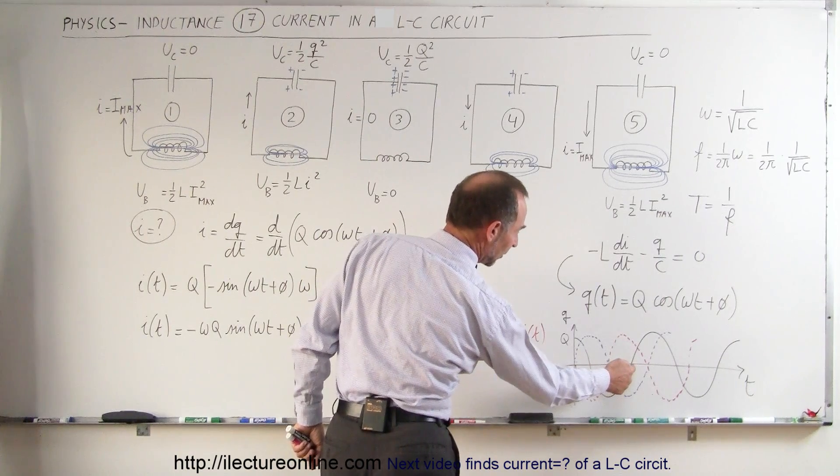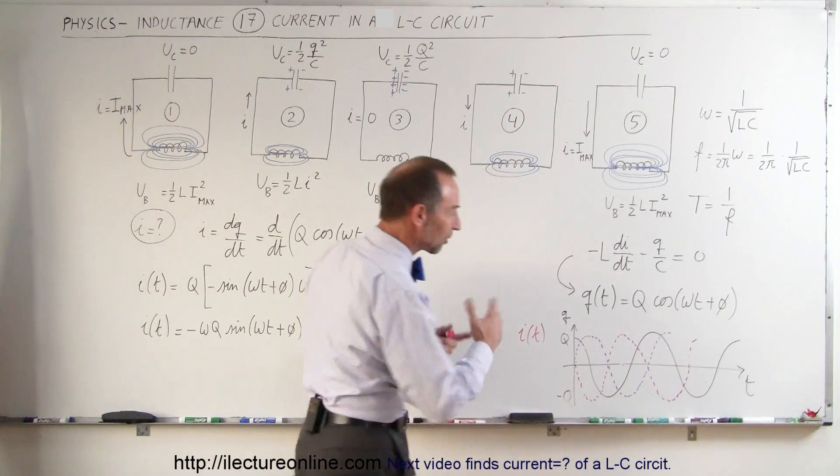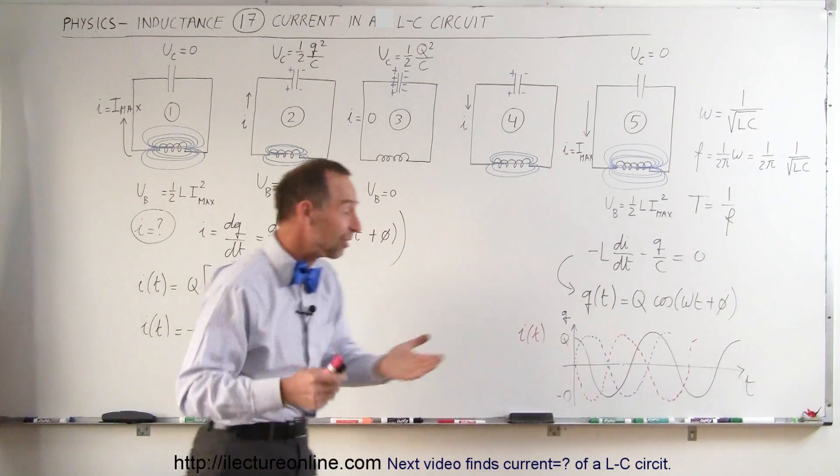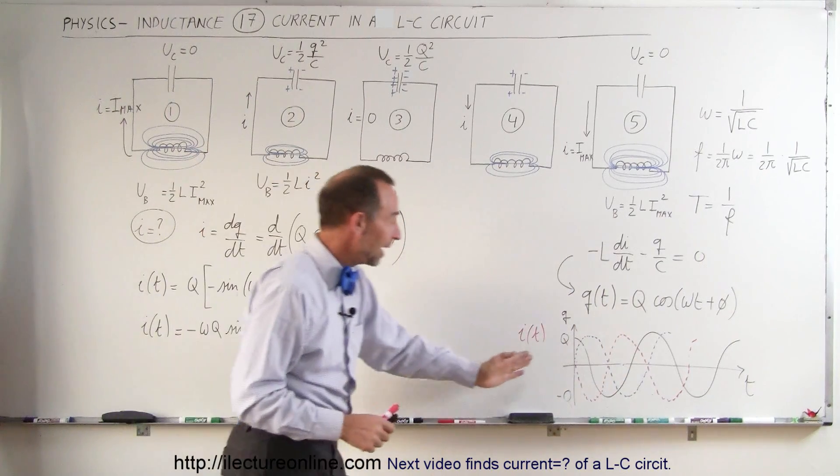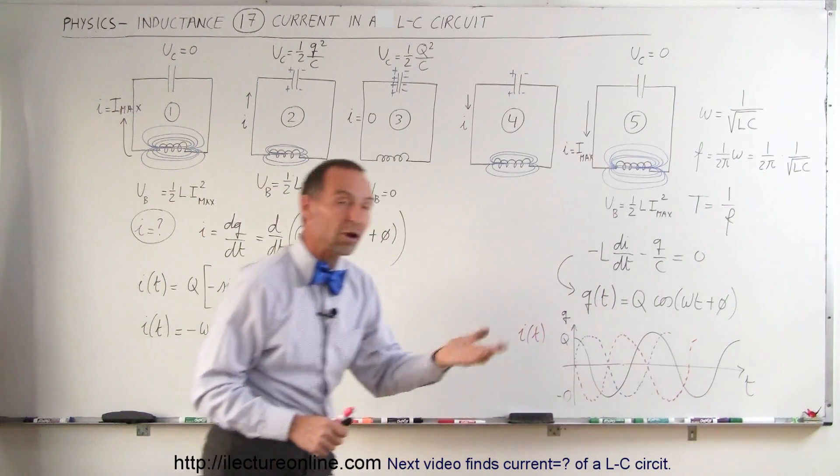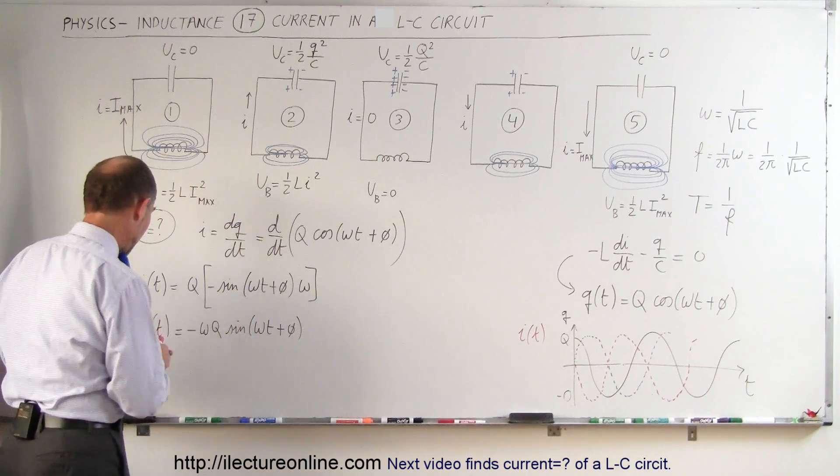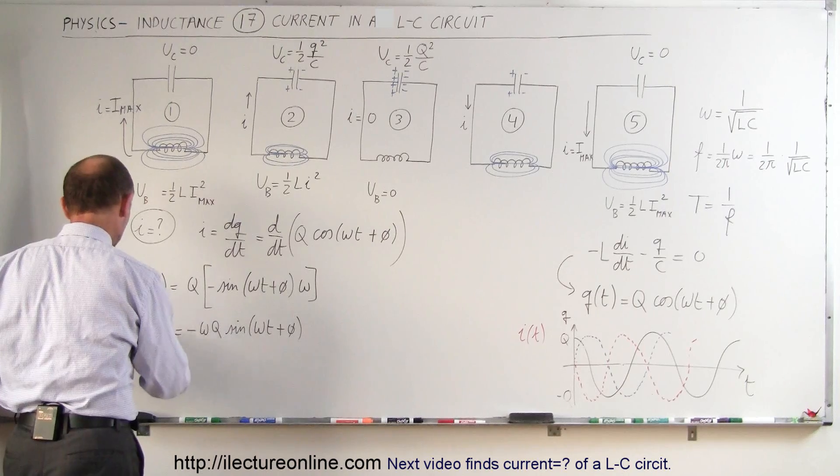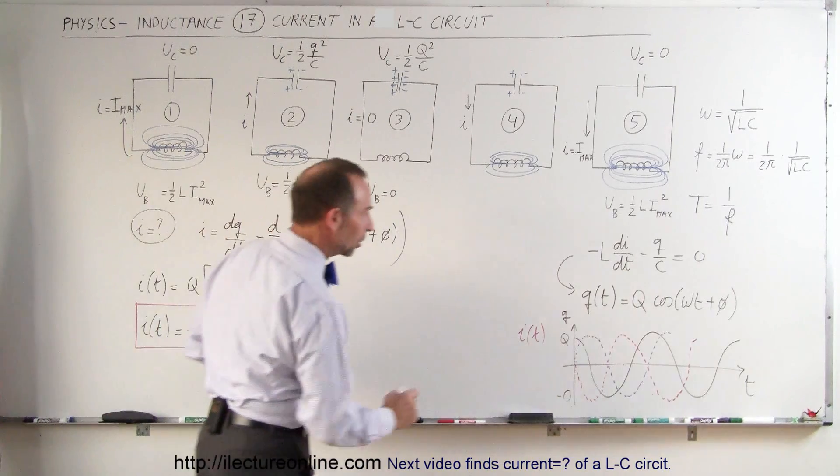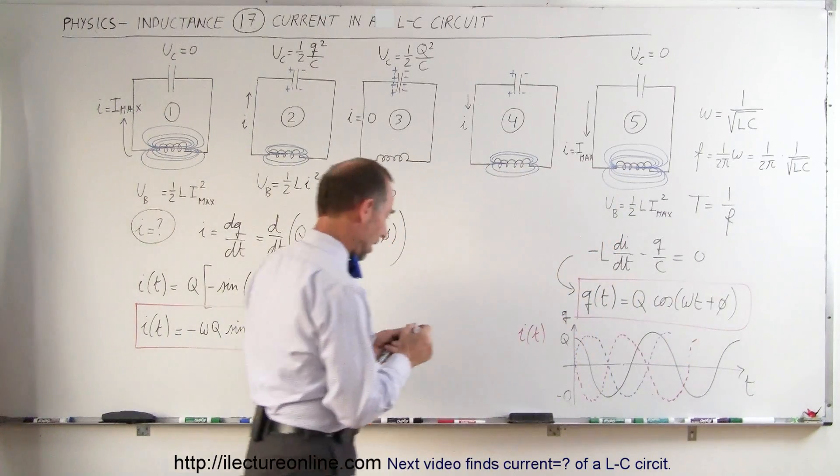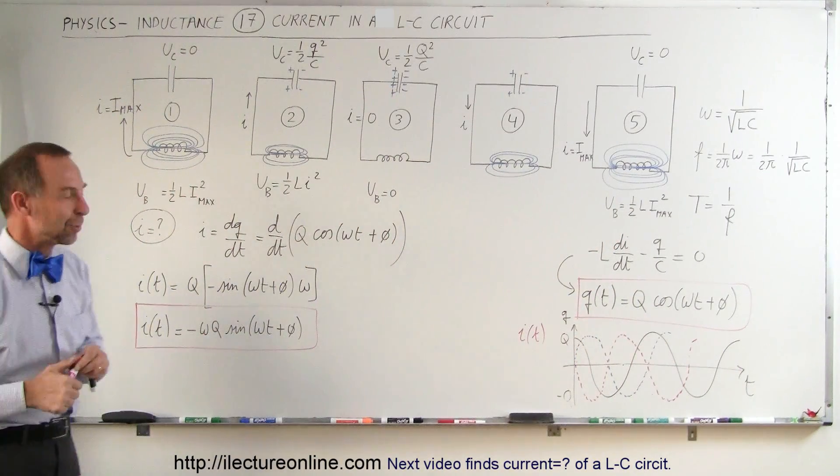And here again, when we have zero charge in the capacitor, we have a maximum current in the other direction. So you can see that the red line here represents the current as a function of time, and the black line represents the charge on the capacitor as a function of time. And so now we have a way to describe both the current and the charge in an LC circuit as a function of time. And that's how we do that.